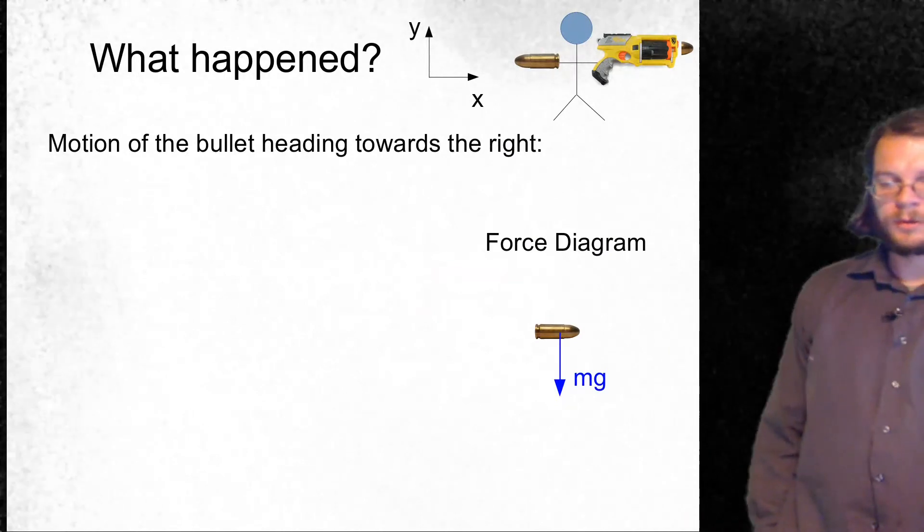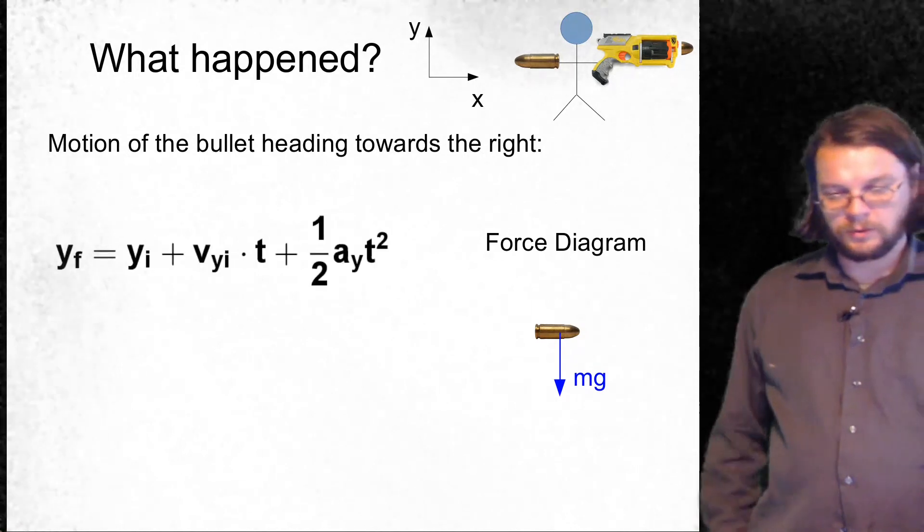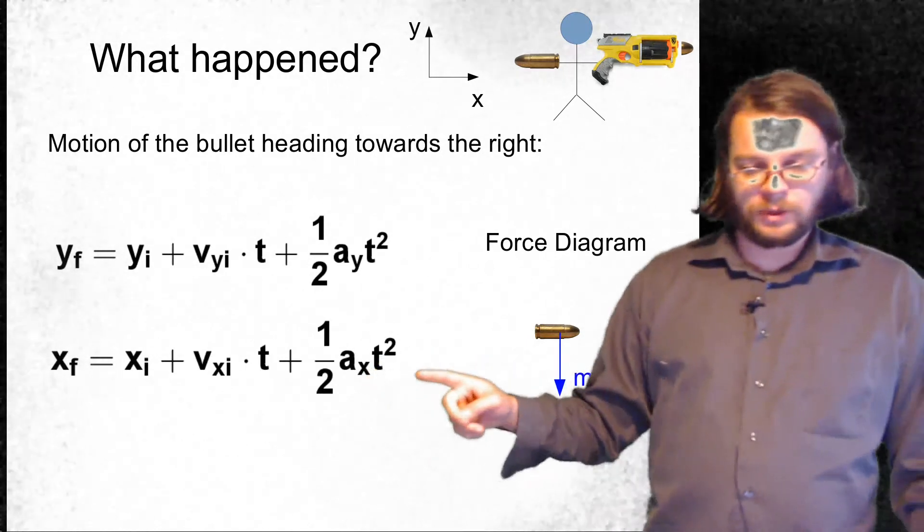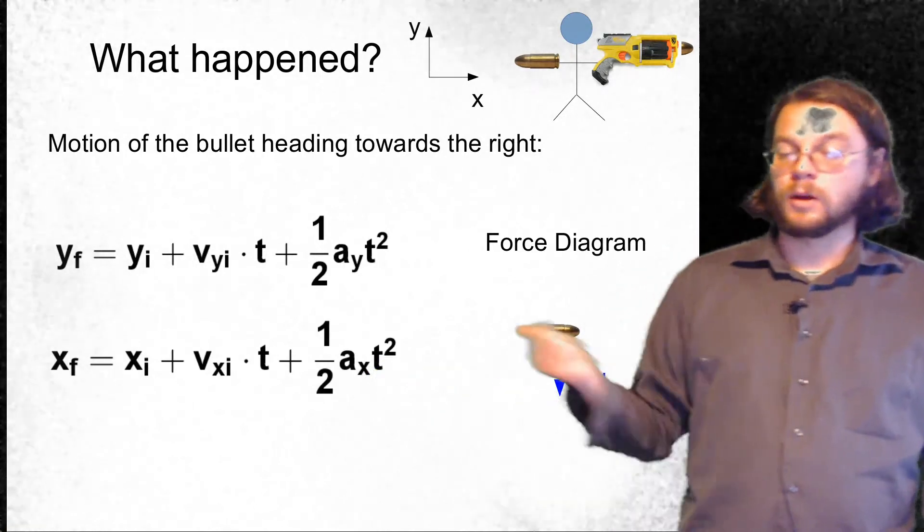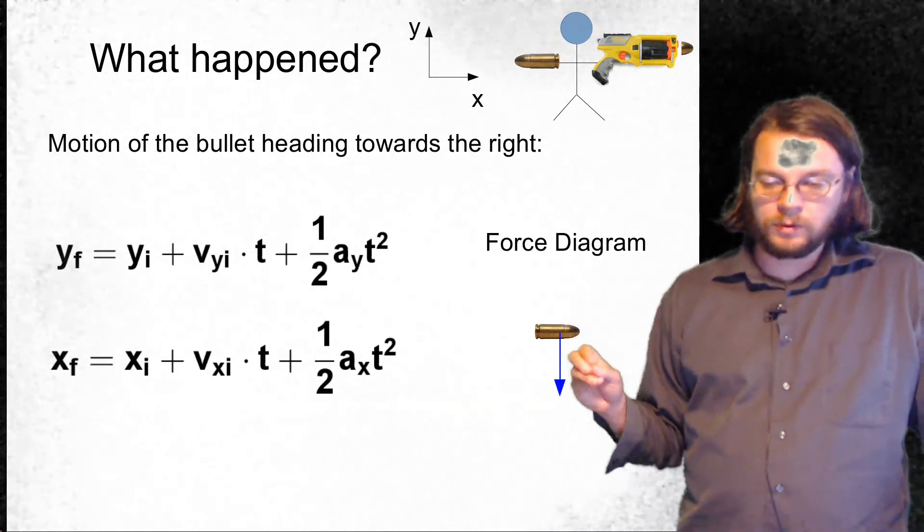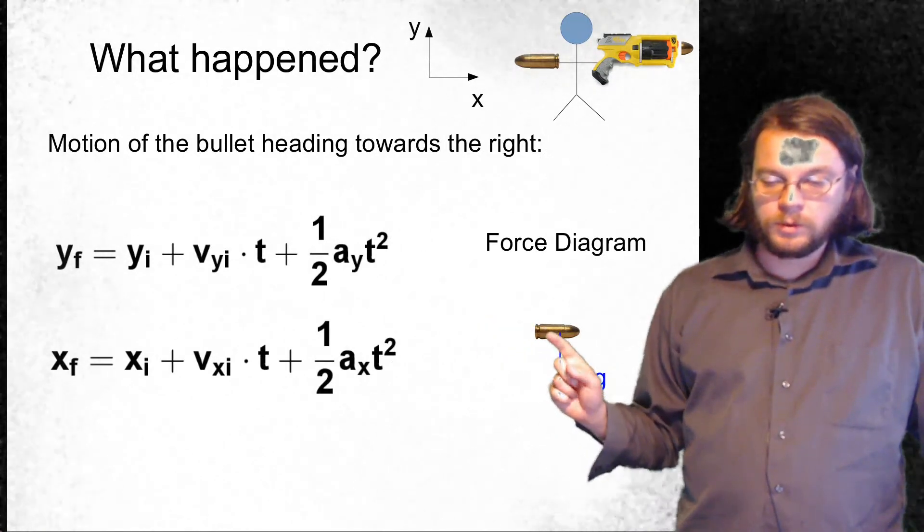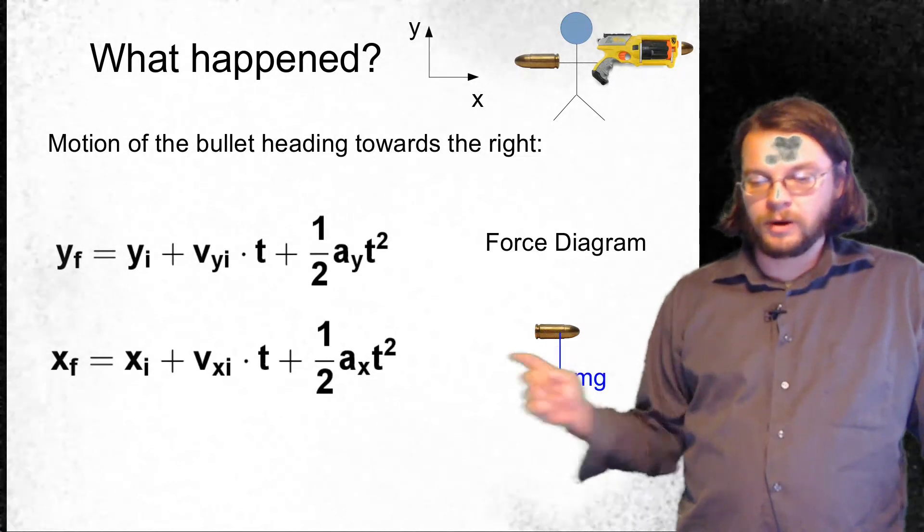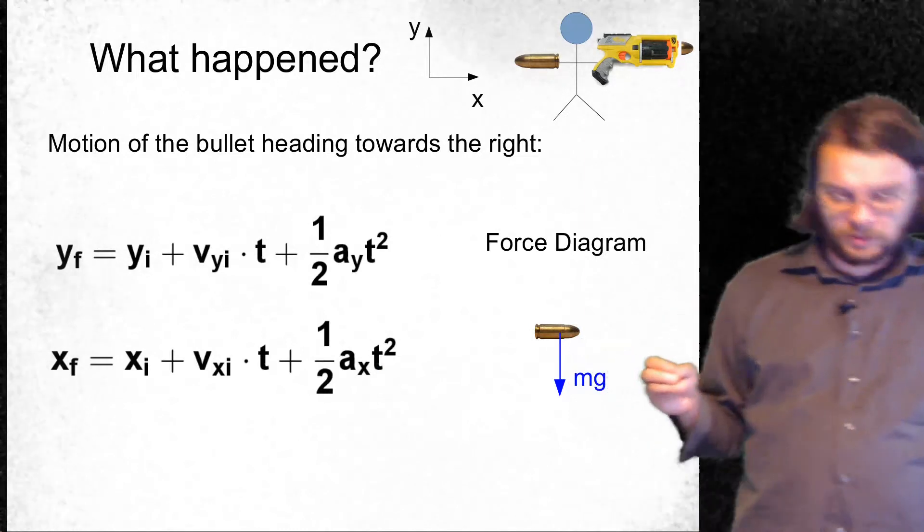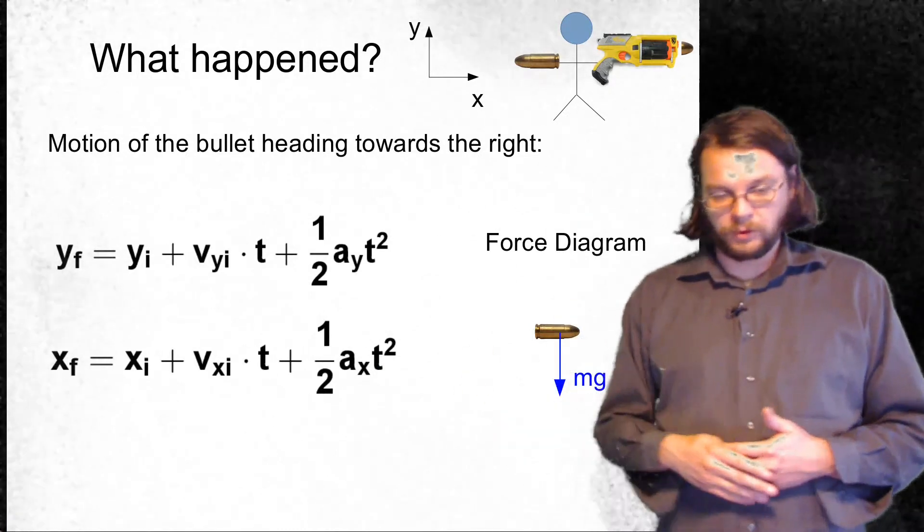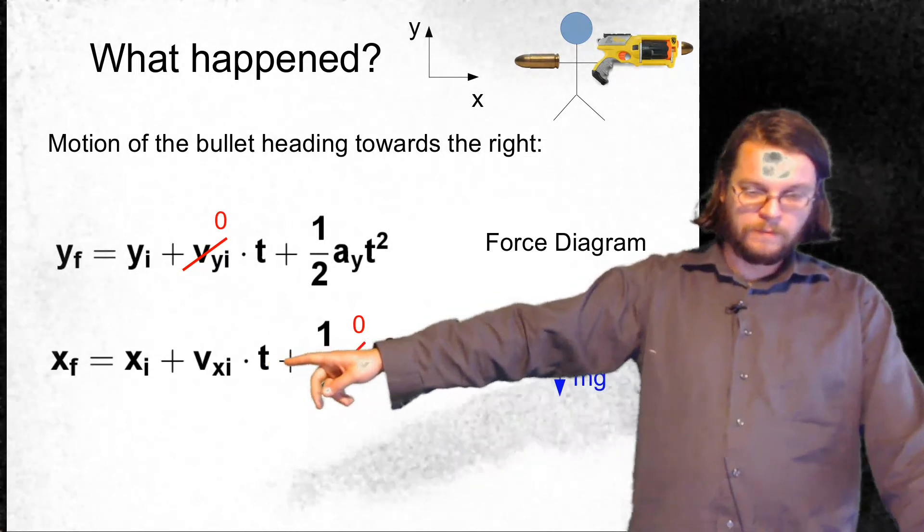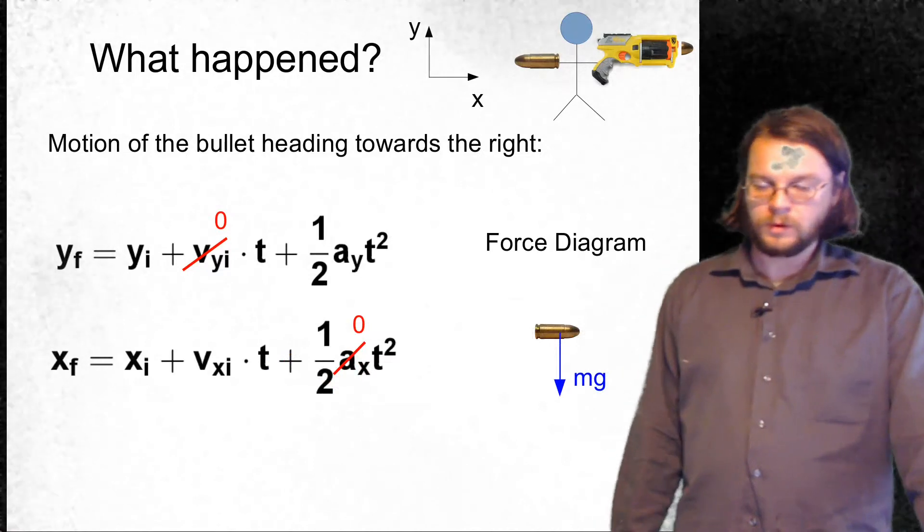And then in terms of the y direction, the acceleration in the y direction has to be non-zero. But the initial y velocity would also be zero because we're not throwing it downwards or throwing it upwards. So that also is going to be zero. So we can solve this equation. This equation is not so interesting, right? The final x position is equal to the initial x position. This equation is a little bit more interesting. So we can actually try to solve for how much time it should take for this thing to hit the ground. So it's the difference in height divided by the acceleration, the square root of two in there. So that's how much time it takes this thing to fall to the ground.